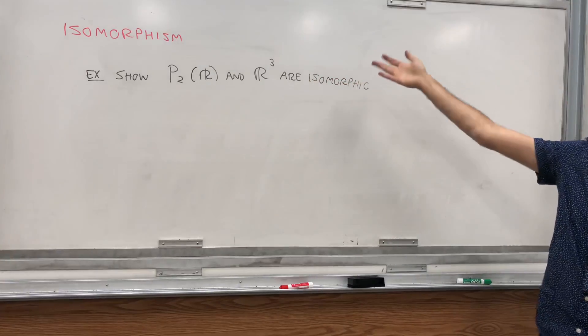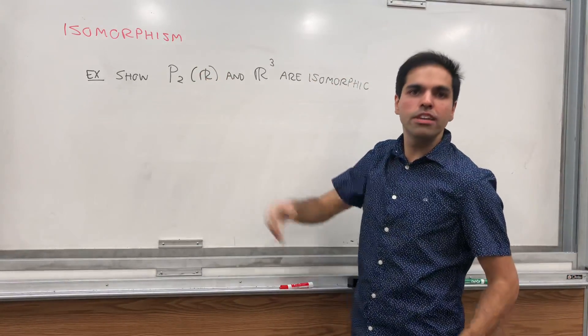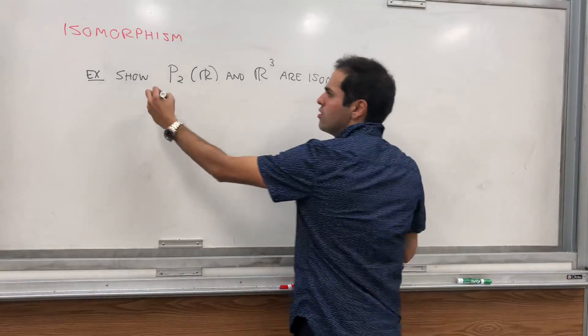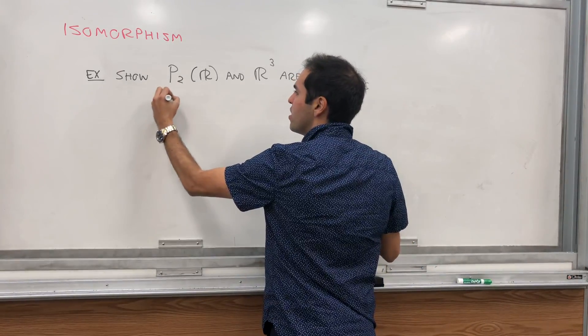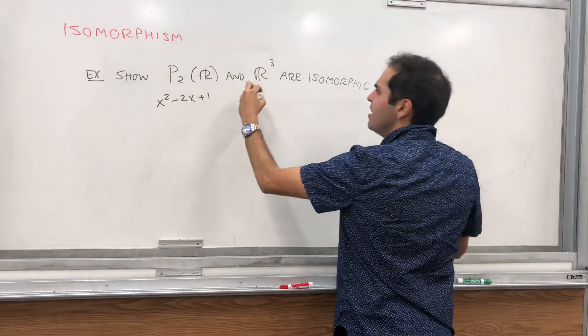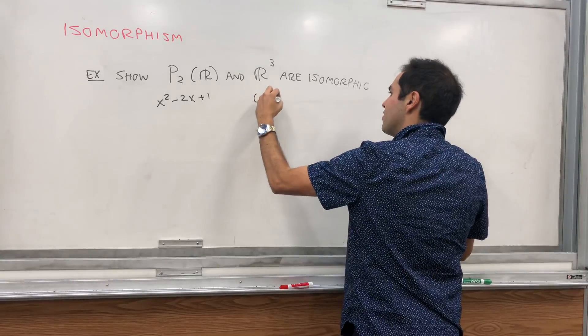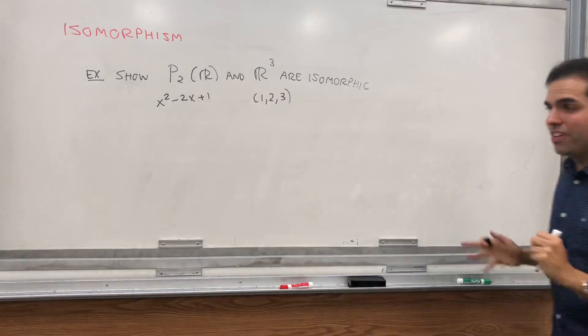For example, let's show that the space of polynomials of degree less than or equal to 2, so for example x squared minus 2x plus 1 is in this, and R3, like the vector (1, 2, 3), are isomorphic.